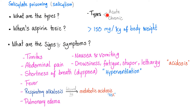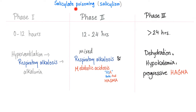Salicylate poisoning is acute or chronic, and the toxic dose depends on your body weight. Signs and symptoms include tinnitus — ringing in the ear — nausea, vomiting, abdominal pain, drowsiness, fatigue, stupor, lethargy, shortness of breath due to hyperventilation, fever, respiratory alkalosis followed by metabolic acidosis, and pulmonary edema.